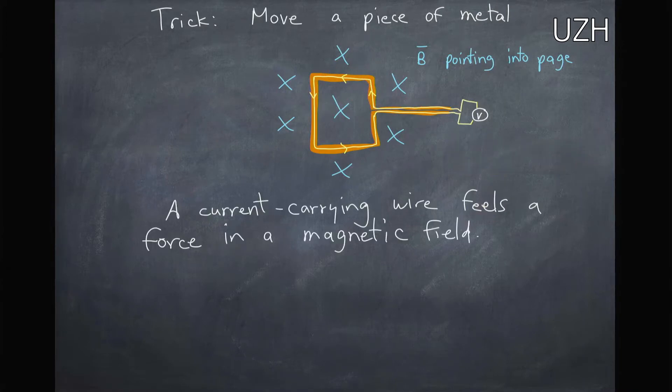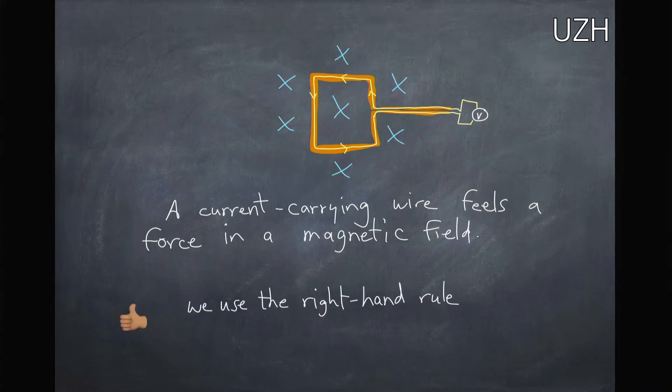Now a current carrying wire will feel a force in a magnetic field. And we can use the right hand rule to figure out what that force would be. So of course we have to put our fingers in the direction of the current, bend them into the direction of the magnetic field, and then we'll know the force is the direction our thumb is pointing.